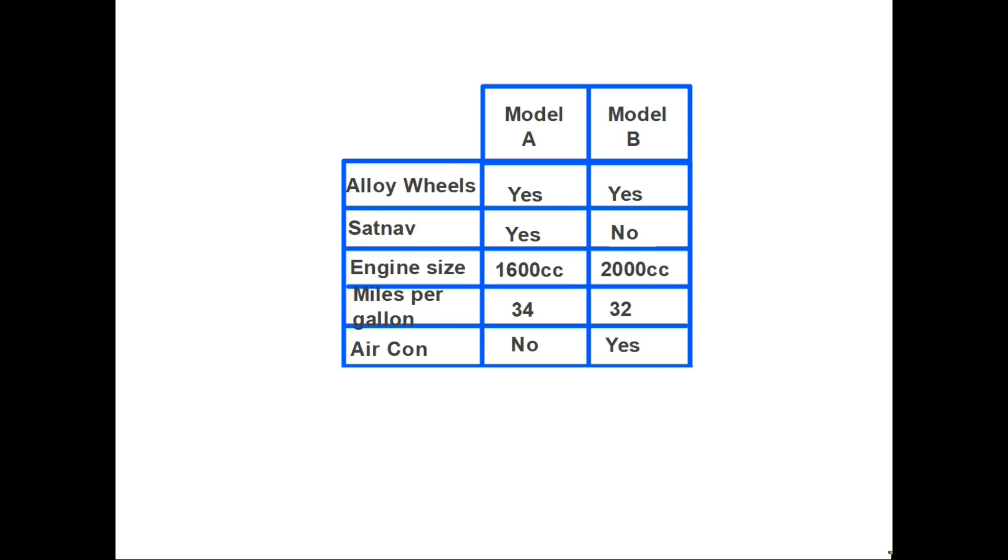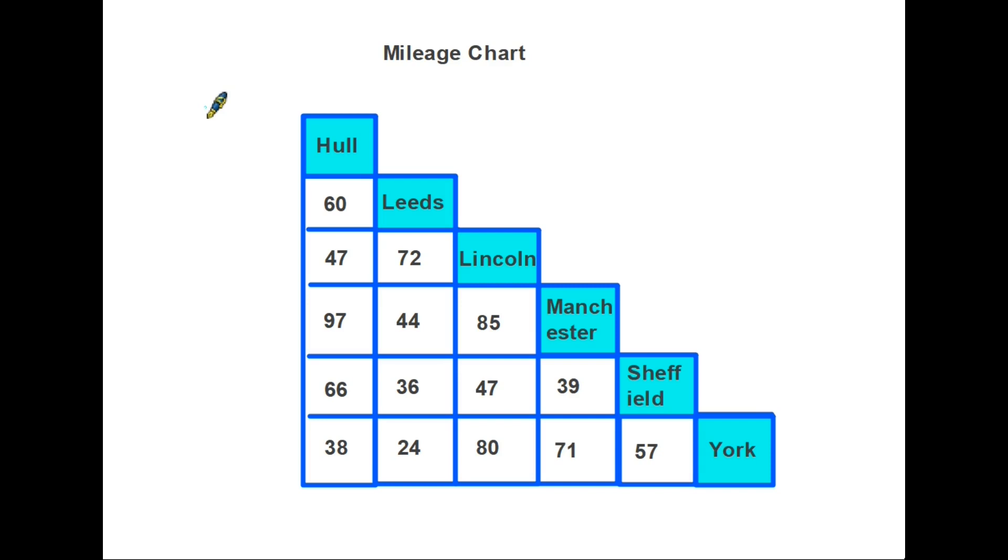Let's take a look at a different kind of chart, and this one's very specific. It allows us to find distances between places and it is called a mileage chart. Quite simply it works so that if you want to know what the distance is, let's say between Hull and Sheffield, Hull is the column here, so we go down the column for Hull, we go across from Sheffield, and where they meet is your answer. So Hull to Sheffield is 66 miles. Similarly Manchester to York, Manchester, York, 71 miles. And this kind of table is really used only for this one particular purpose. It is a mileage chart.